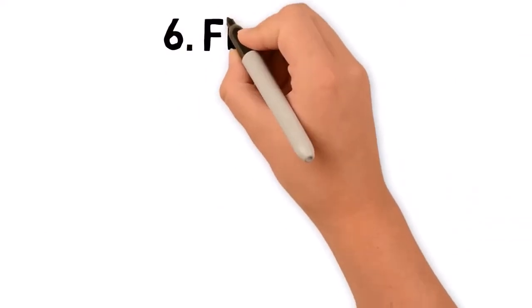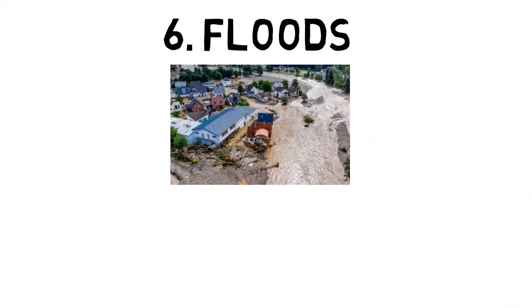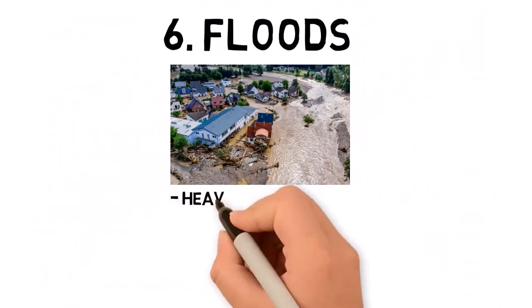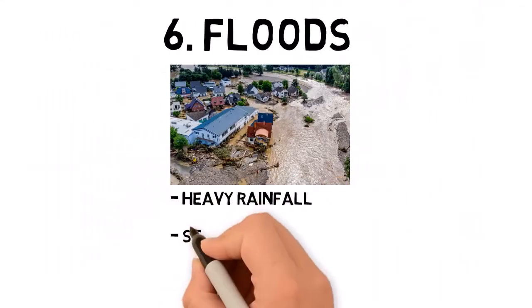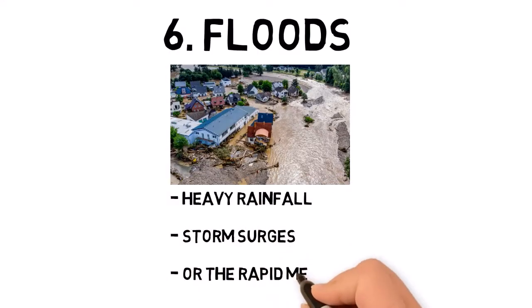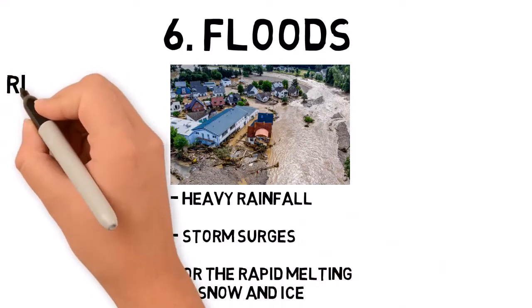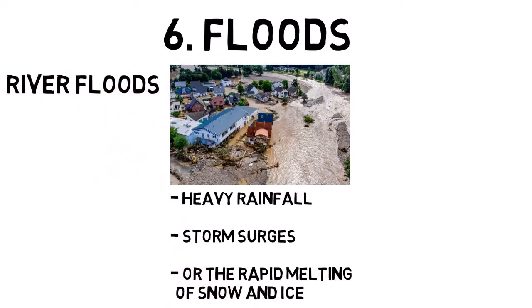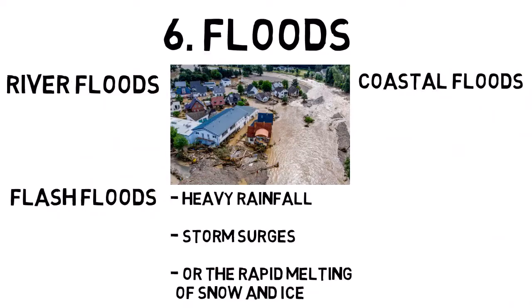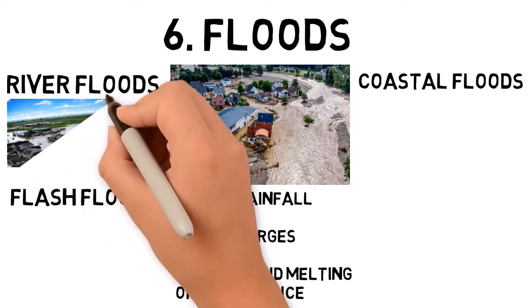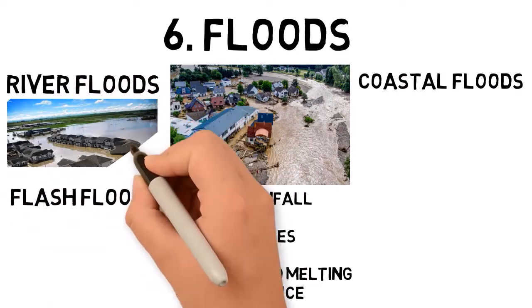Floods occur when water overflows onto normally dry land, often as a result of heavy rainfall, storm surges, or the rapid melting of snow and ice. There are several types of floods, including river floods, flash floods, and coastal floods. River floods happen when rivers overflow their banks due to excessive rainfall or snowmelt.